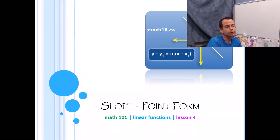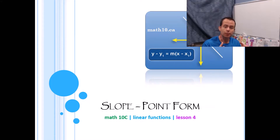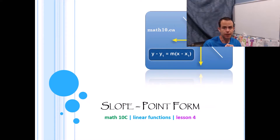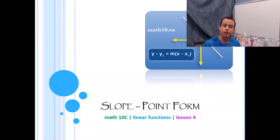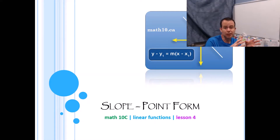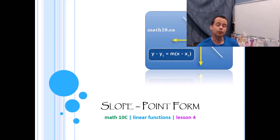Hey friends, so yesterday we started this unit talking about how to write the equation of a line. Our focus on yesterday's lesson was slope y-intercept form: y equals mx plus b, where m was your slope and b was your y-intercept. What we want to look at today is the next form, called slope point form. It's often used when you're trying to build an equation but you don't actually know what the y-intercept is.